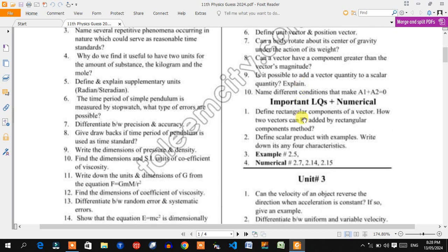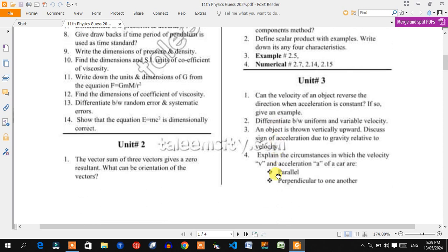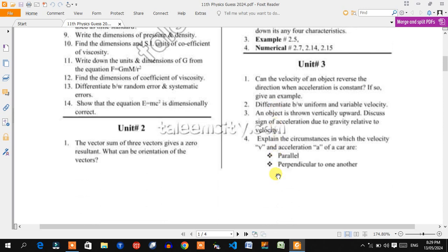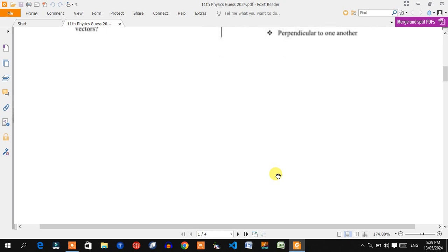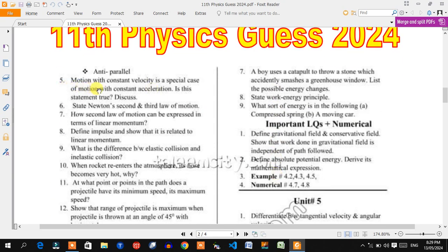Here are the long questions. Numerical examples: rectangular components of vector - very important, here is the diagram. Explain scalar product and characteristics. Examples 2.5, 2.7, 2.14, and 2.15 - these are the numericals.